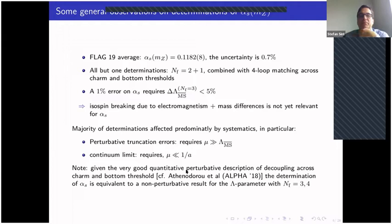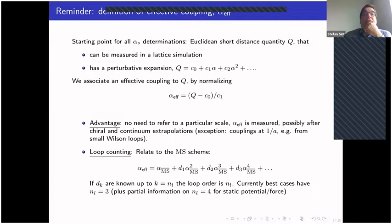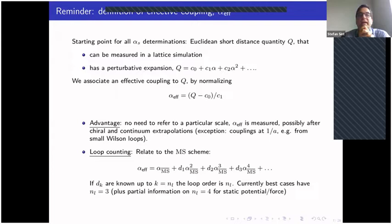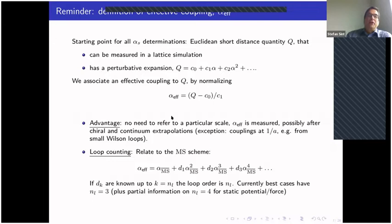The starting point for all these determinations is some Euclidean short-distance quantity Q that must be measurable in a lattice simulation and must have a perturbative expansion — Q equals some constant plus alpha plus a term of order alpha squared. To define an effective coupling associated with this observable, we subtract the constant piece and divide by the leading term in alpha, so that alpha_effective has a perturbative series starting with alpha.